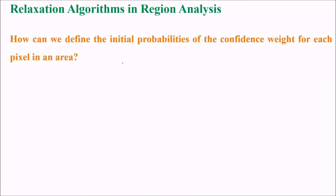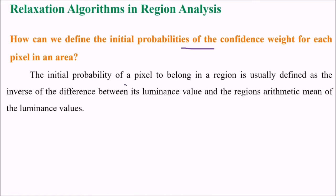Relaxation algorithm in region analysis. How can we define the initial probabilities of the confidence weight of each pixel in an area? The initial probability of a pixel to belong to a region is usually defined as the inverse of the difference between the luminance value and the region's arithmetic mean of the luminance values.